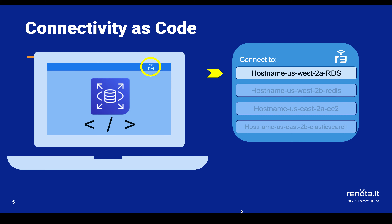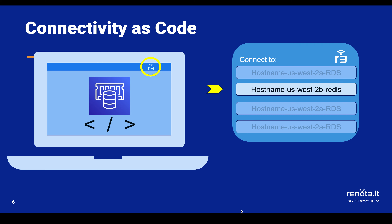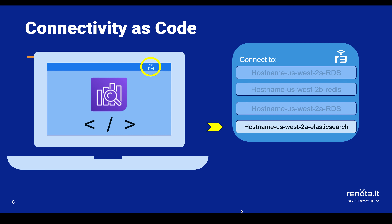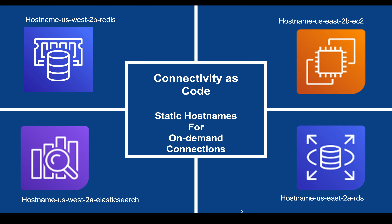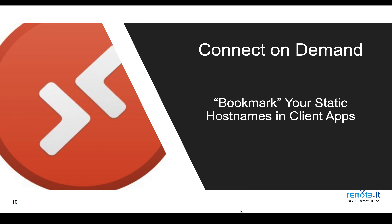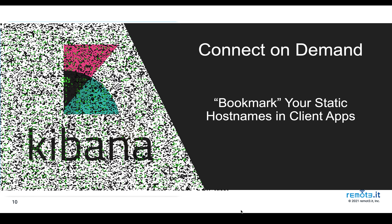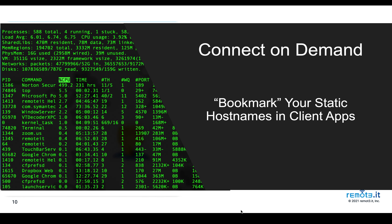A simple package install lets you connect with resources in any AWS region, AZ, VPC, even across multiple accounts, by giving you a single static hostname to every resource. Install Connectivity as Code to bookmark static host addresses in your client applications and preserve those addresses as long as you need them. They're always available on demand.